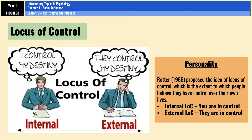For example, in an exam, somebody with an external locus of control might blame the teacher for making the test hard if they do badly, or use luck to explain why they did well. Somebody with an internal locus of control, on the other hand, would see themselves as the reason for doing badly or doing well — perhaps they focused their revision too much on another subject, or found a really effective revision technique. Either way, the result is down to themselves and not to others.